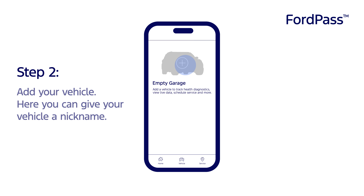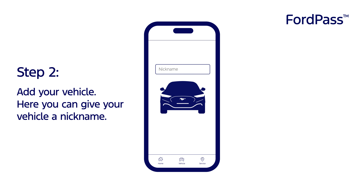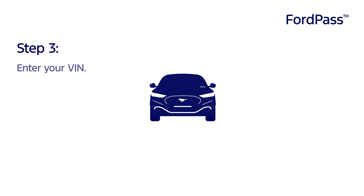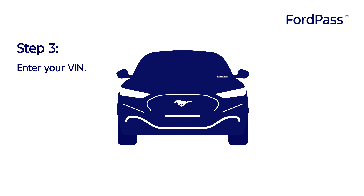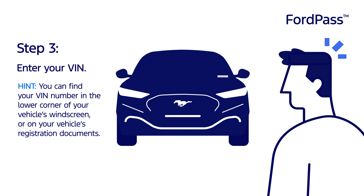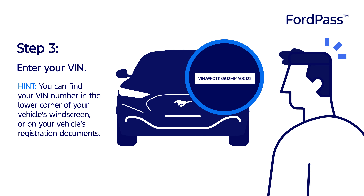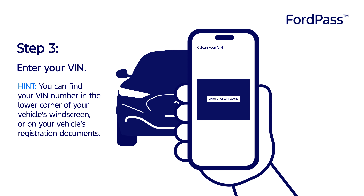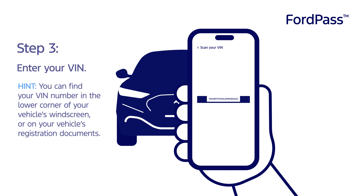Step 2: Add your vehicle. Here you can give your vehicle a nickname. Step 3: Enter your VIN. You can find your VIN number in the lower corner of your vehicle's windscreen or on your vehicle's registration documents.